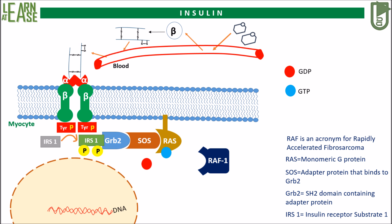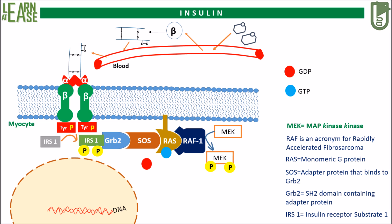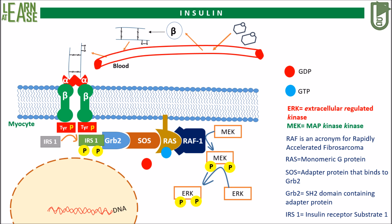SOS will recruit RAS and help to replace GDP with GTP. As soon as GTP binds to RAS, it gets activated. RAF kinase will then bind to activated RAS and also gets activated. RAF kinase will then phosphorylate another protein named MAP kinase kinase, abbreviated as MEK. Once activated, MEK will phosphorylate another kinase named ERK, which is an acronym for Extracellular Regulated Kinase.